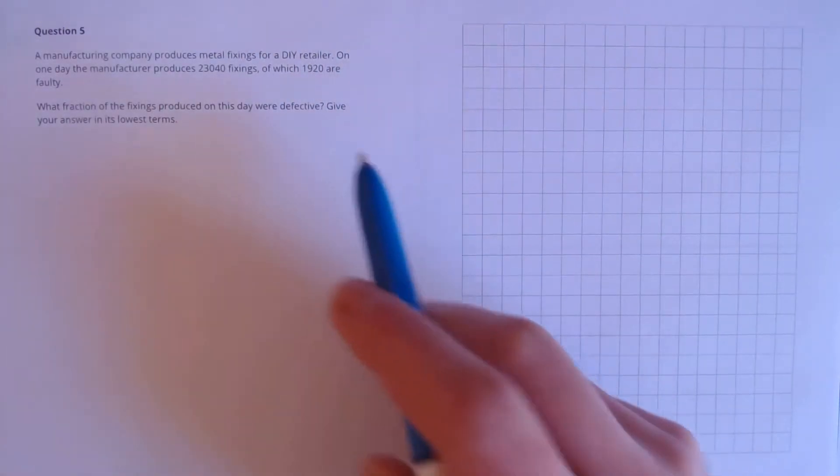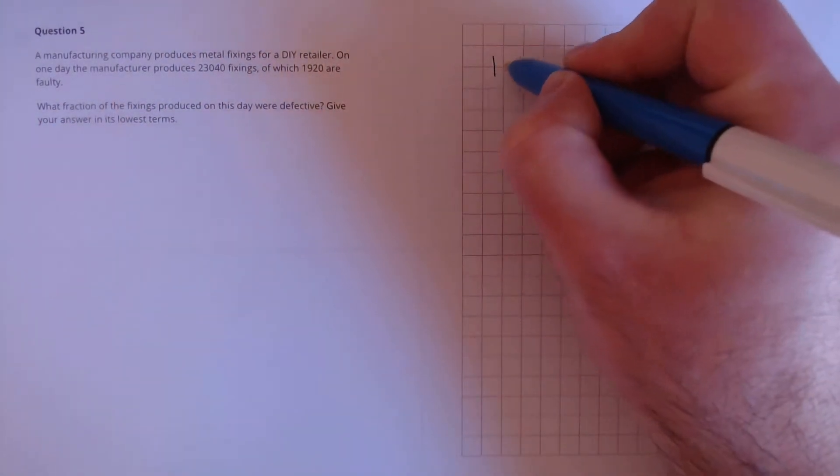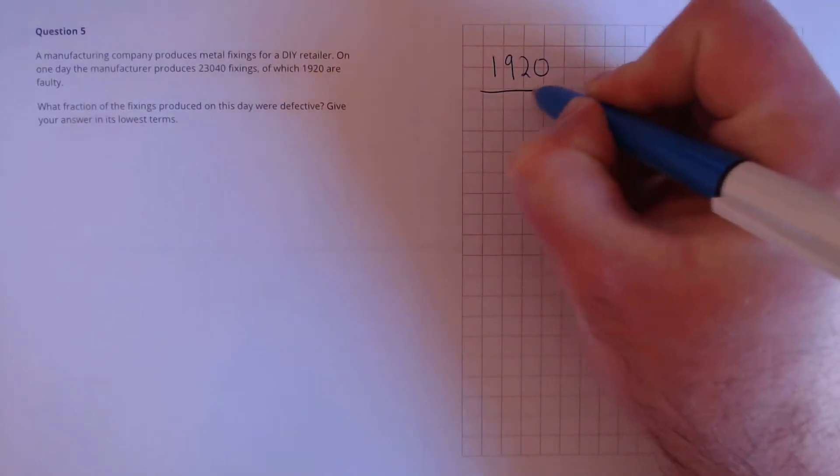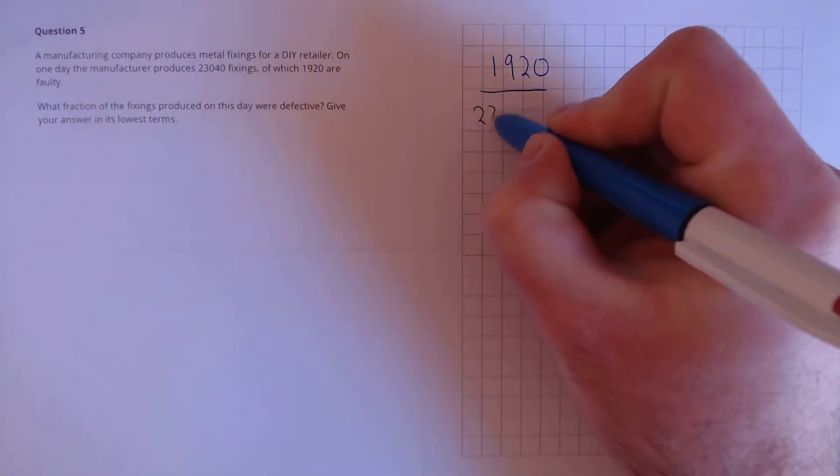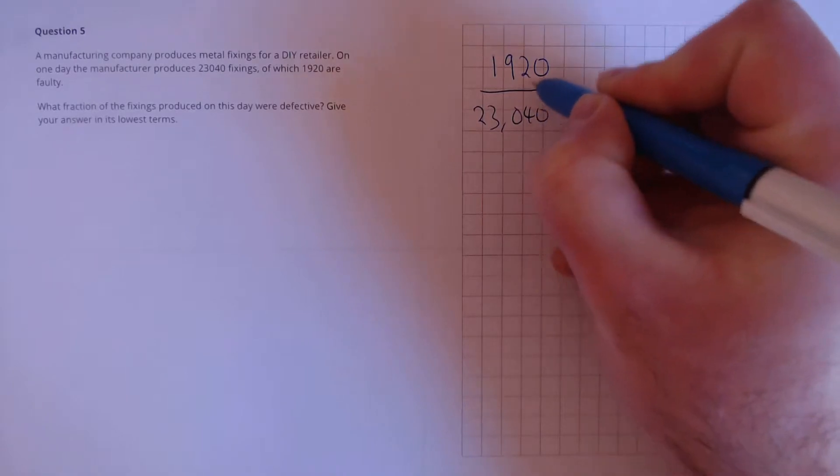First, let's set up the fraction. That's 1,920 divided by the total, 23,040.